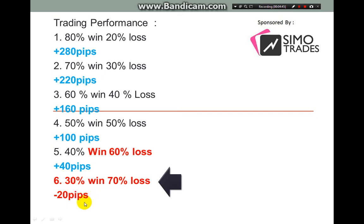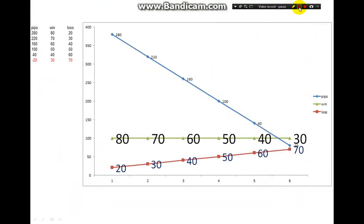That's why in trading you really have to control your trading. Even though you are losing 70% of the time, you only lose about 20 pips when you control the risk/reward ratio. How to do the calculation in detail — I will show you in the next video. Until then, thanks. Assalamualaikum.